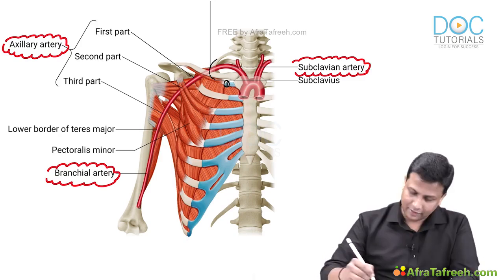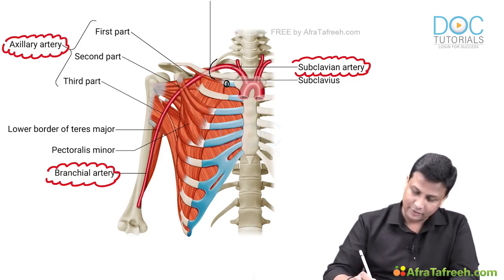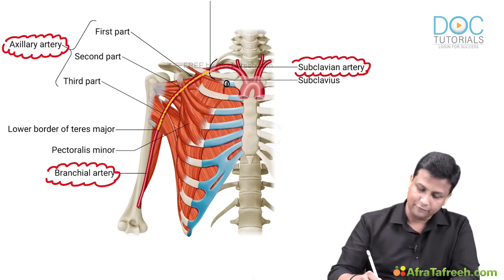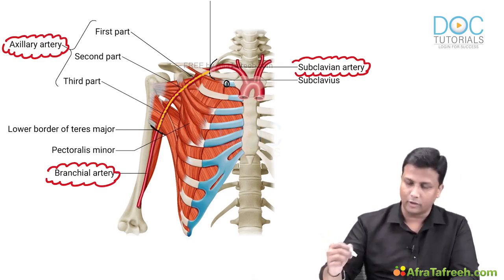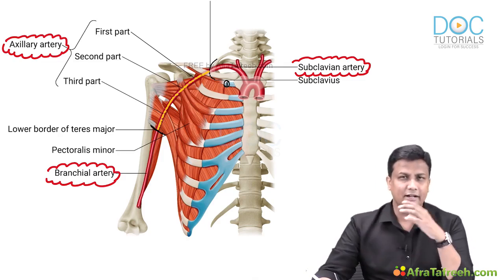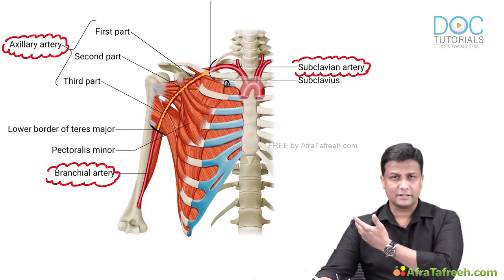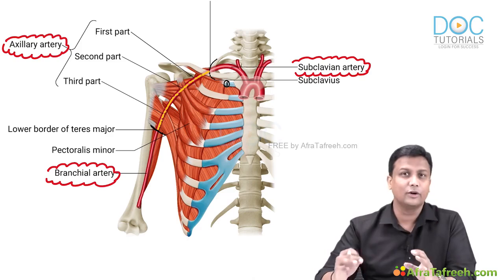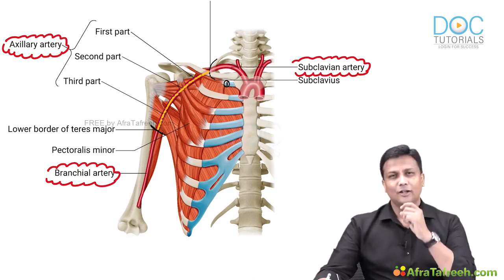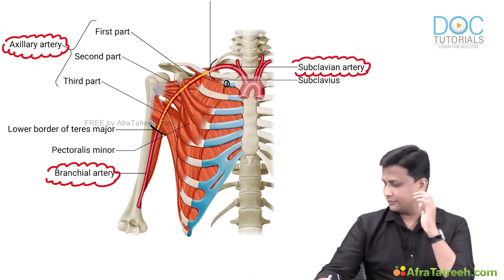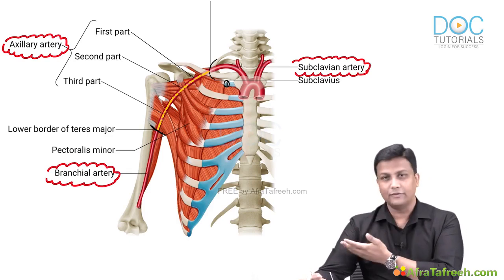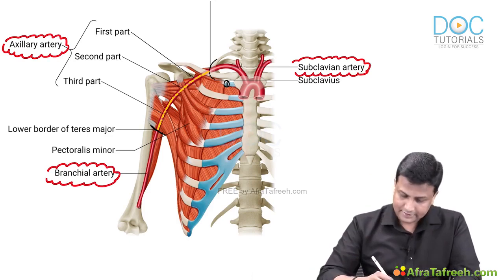After beginning from the outer border of the first rib, the axillary artery travels all the way down and extends up to the lower border of the teres major muscle. We have already seen the teres minor and teres major on the posterior aspect. So the axillary artery extends from the outer border of the first rib up to the lower border of teres major.